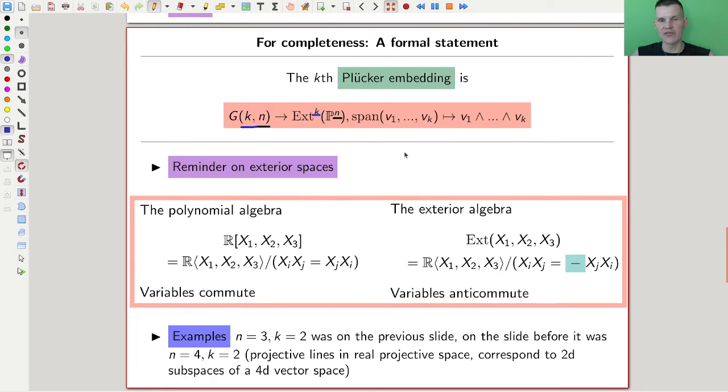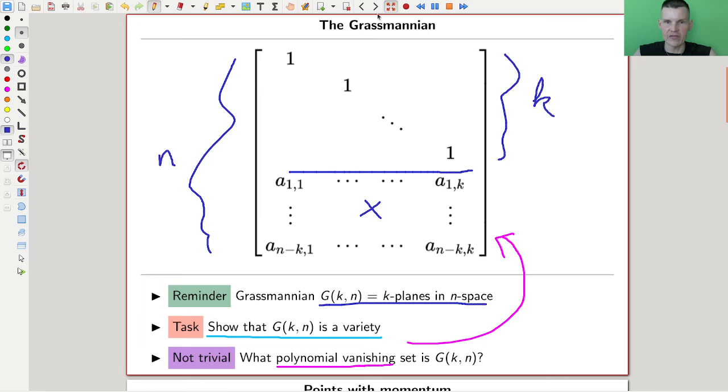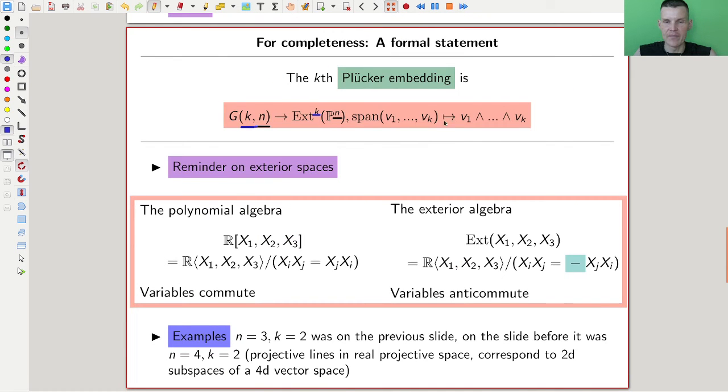Just sends the span of those guys, which is an element in the Grassmannian, right? So remember this is essentially just this type of picture, the span of those guys, into the wedge of those guys.